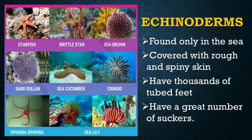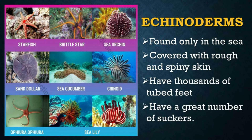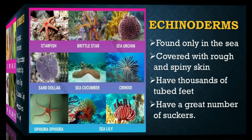Echinoderms are invertebrates that are found only in the sea. They are covered with rough and spiny skin. Most echinoderms have thousands of tube feet on the underside of their bodies, which allow them to catch prey and cling to rocks. Most echinoderms also have a great number of suckers. Among the echinoderms are starfish, sea urchin, and sea cucumbers.